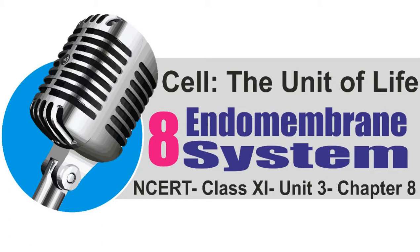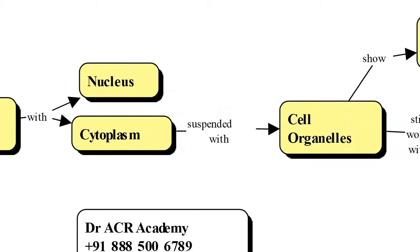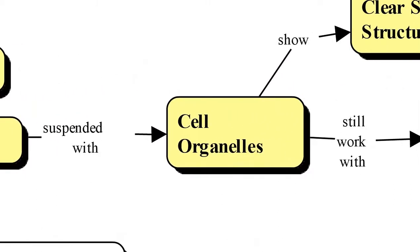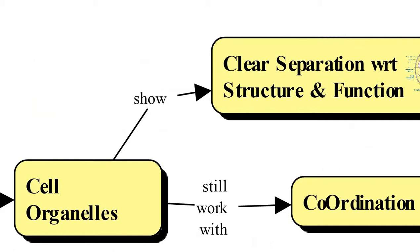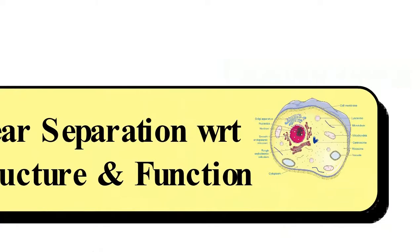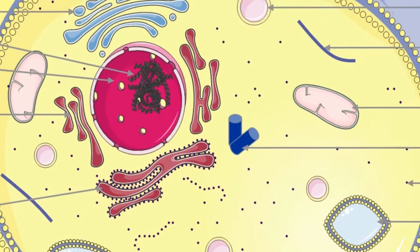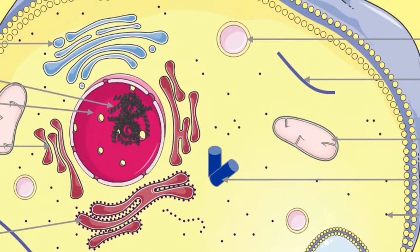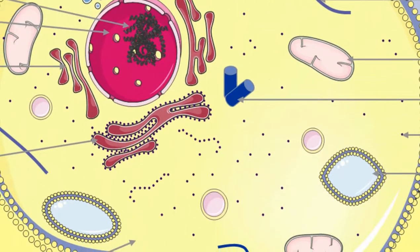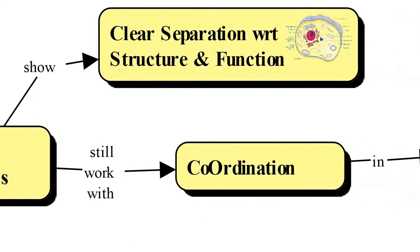In this video we will discuss the endomembrane system. Eukaryotic cells possess a nucleus and cytoplasm as major components, and all cell organelles are suspended in the cytoplasm. These organelles show a clear separation with respect to their structure and function — this is called compartmentalization. Due to compartmentalization, each organelle maintains its own conditions to perform specific tasks, yet some organelles still work in coordination.